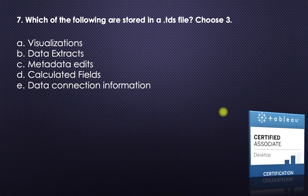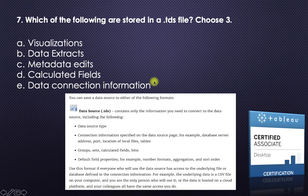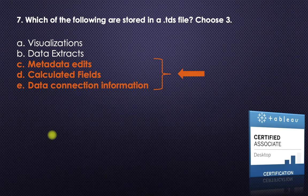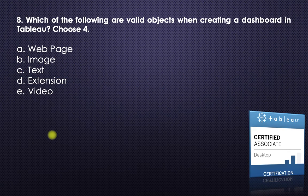Next question: which of the following are stored in a .tds file? Choose three. A .tds file contains only the information needed to connect to the data source, including: data source type, connection information, groups, sets, calculated fields, and default field properties. So it will have data connection information, calculated fields, and metadata edits. What it will not have is data extracts and visualizations — those two things are not stored in the .tds file.